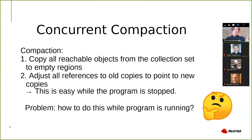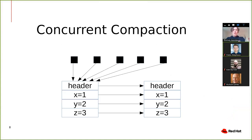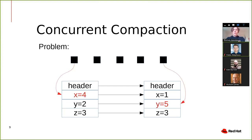Compaction means: copy all reachable objects from the collection set to new regions, then adjust all references to those objects to point to the new objects, and then reclaim all the old regions. The problem is how do we do this while the program is running? We may have one thread accessing one copy of the object and updating a field, while another thread has a pointer to the new copy and updates another field. Which one is the object now? We have a consistency problem here.